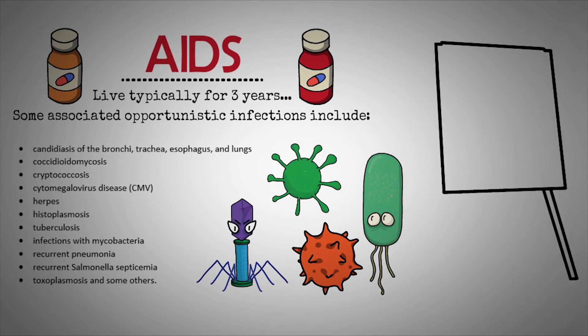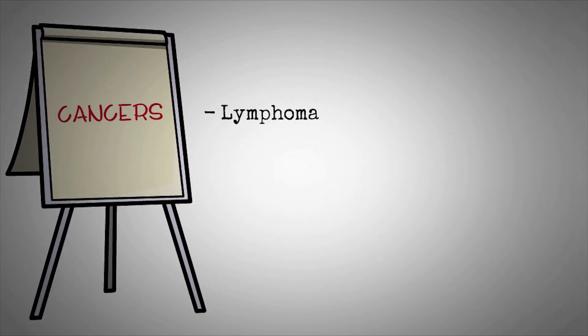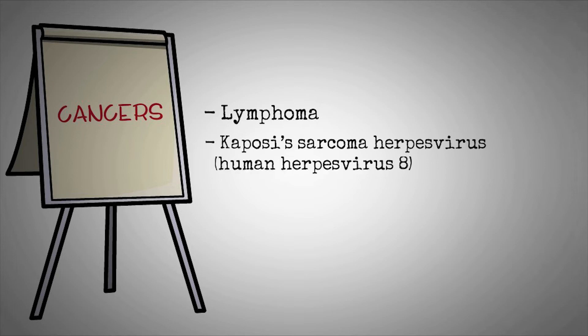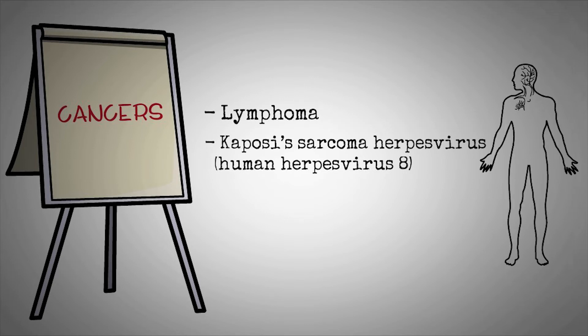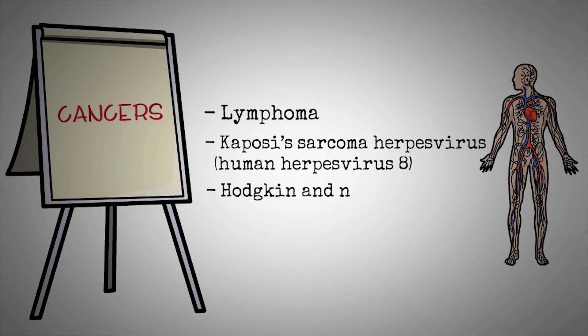A person with HIV may have a higher risk of various types of cancer, including lymphoma. Kaposi's sarcoma herpesvirus, also known as human herpesvirus 8, causes a type of cancer involving the growth of abnormal blood vessels, which can develop anywhere in the body. Hodgkin and non-Hodgkin lymphoma also have strong links to HIV infection, affecting the lymph nodes and lymphoid tissues. A female with HIV should also receive regular checks for cervical cancer.